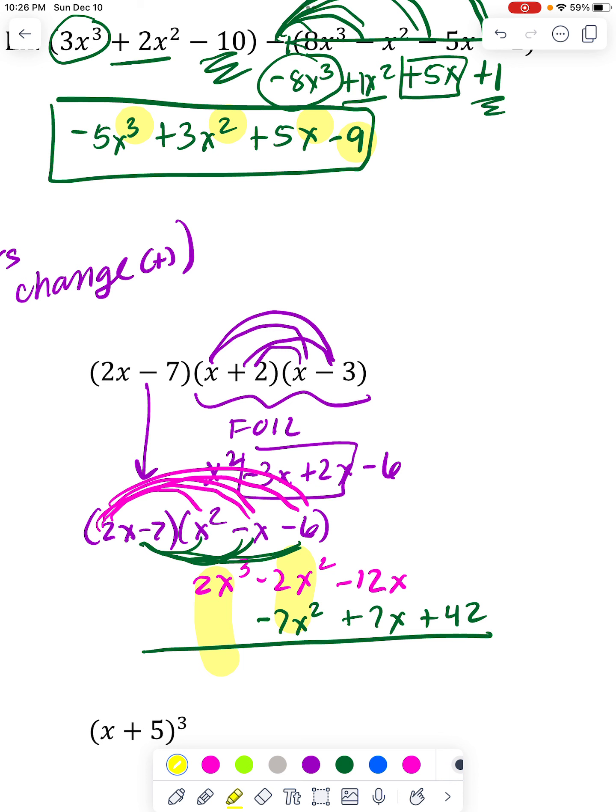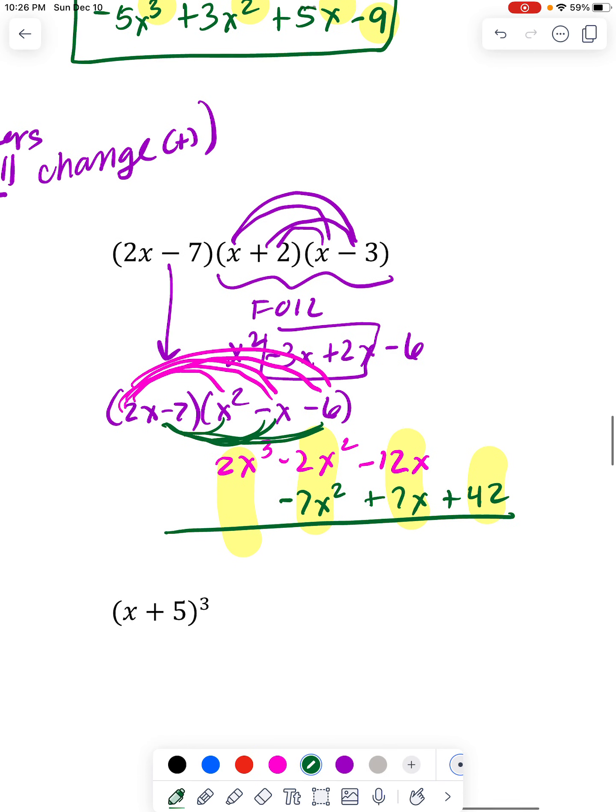And then again, I do it this way just so I can line these up. And I can say, okay, I only have this 2x³. Nothing combines with it. -2x² minus 7 more is -9x².